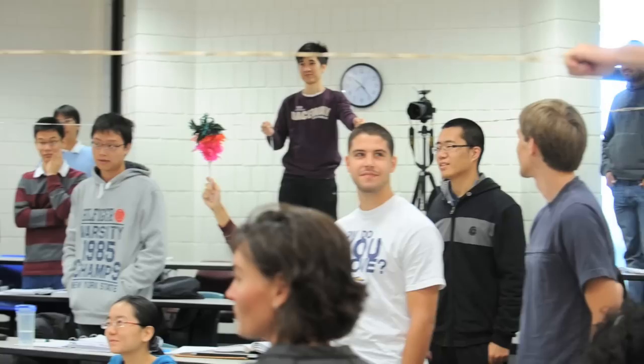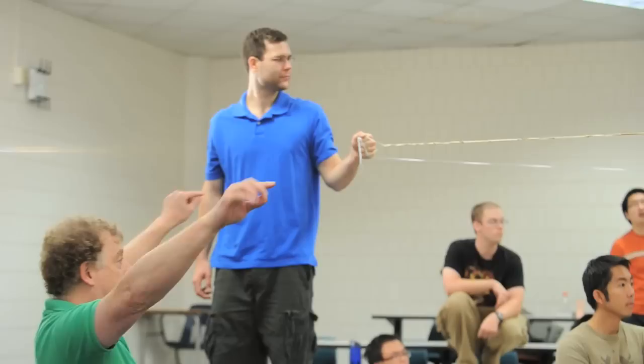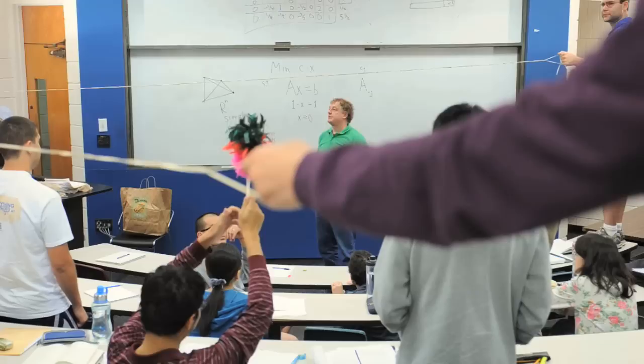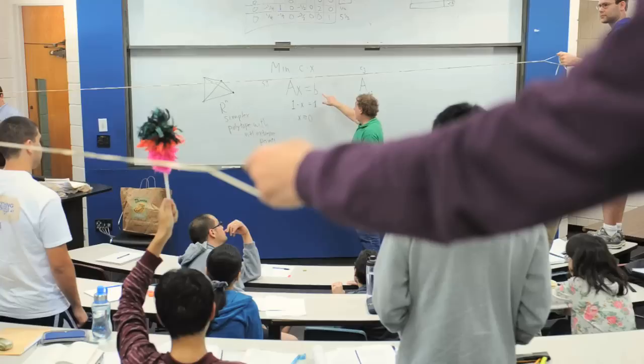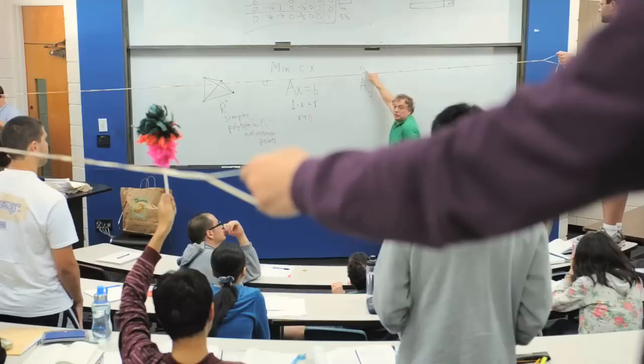So now we have a basic feasible solution. We see the three basic variables. This column from A, this column from A, that column from A. And do you see the simplex? See the triangle that they make? That's the simplex of the simplex method.